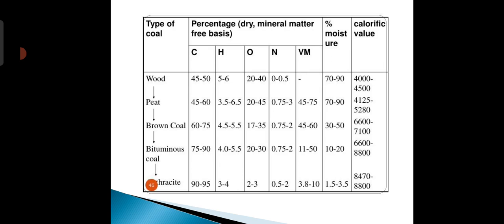The table shows the type of coal with columns for percentage of carbon, hydrogen, oxygen, nitrogen, volatile matter, percentage of moisture, and calorific value. For wood: carbon is 45–50%, hydrogen 5–6%, oxygen 20–40%, nitrogen 0–0.5%, volatile matter not listed, moisture is 70–90%, and calorific value is 4,000–4,500.